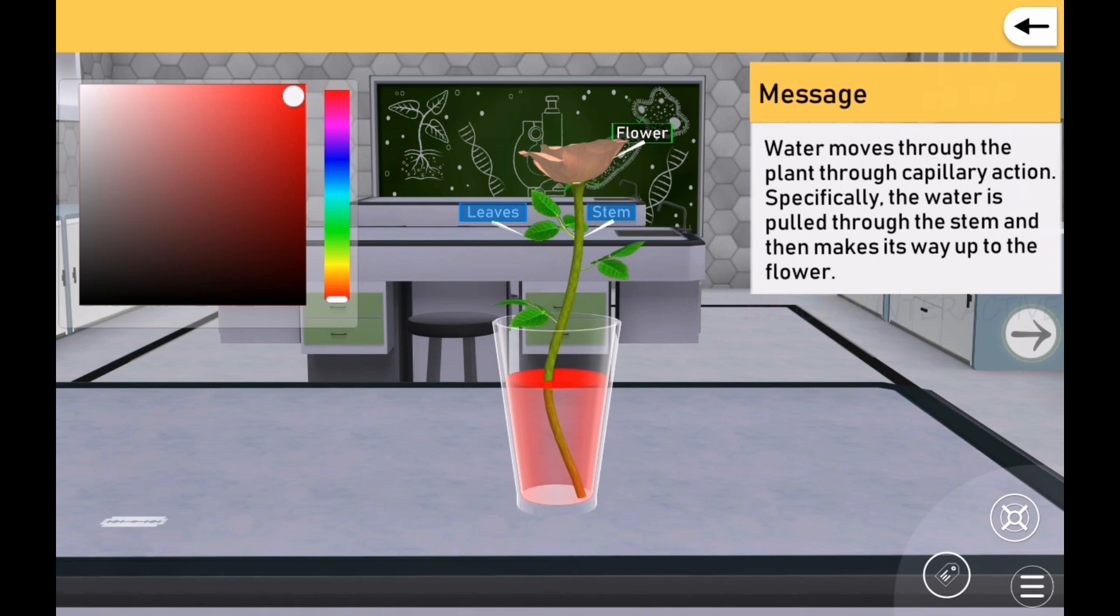پانی کے شکا کی پرکریہ دوارہ پاؤتھوں کے ماتھیم سے گزرتا ہے۔ خاص طور پر پاؤتھے کی ڈنڈھل سے پانی کھیچا جاتا ہے اور پھر پتھیوں اور پھولت تک پہنچتا ہے۔ جاری رکھنے کے لیے پرکاشت بٹن پر کلک کریں۔